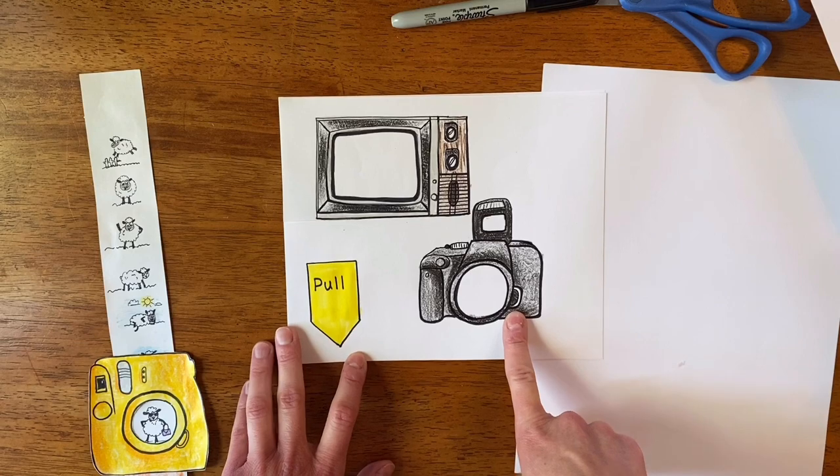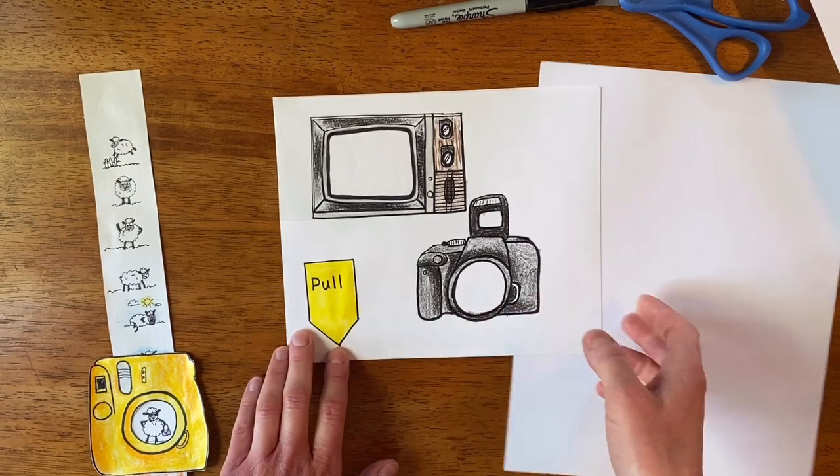So I have already picked what I wanted. I picked the TV and I picked a camera, and then I made a pull tab. Let me show you how it works.